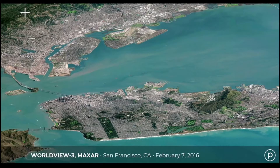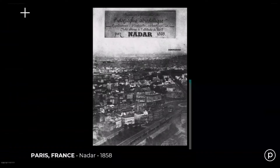We're used to seeing things more like this view from Maxar's Worldview-3 satellite at an angle. At ground level or even from an airplane, we're not really looking straight down, so these oblique views connect our own experience with the unfamiliar view from space.